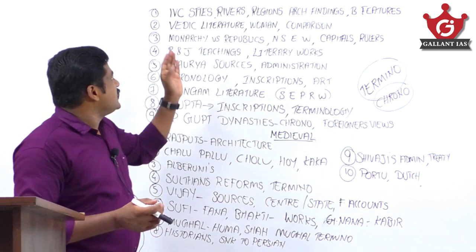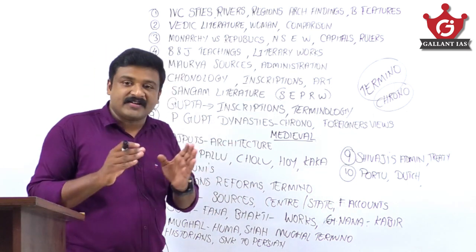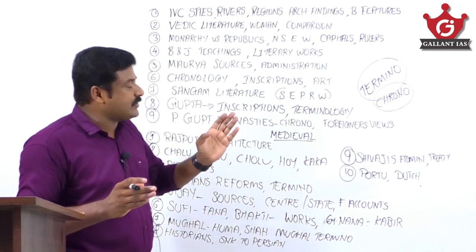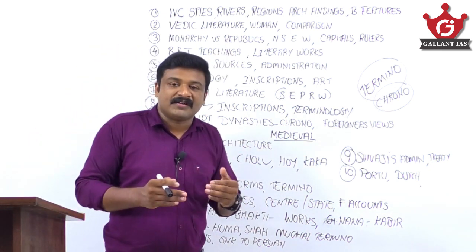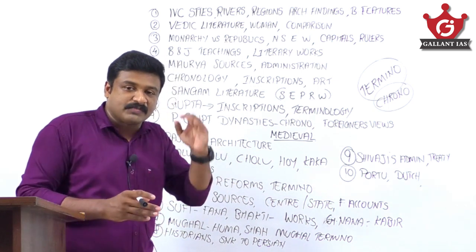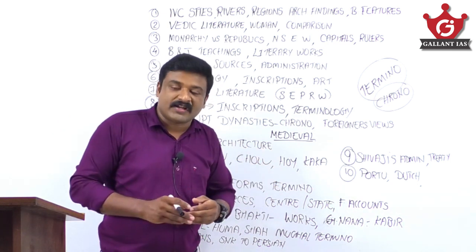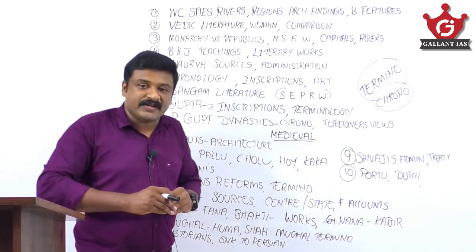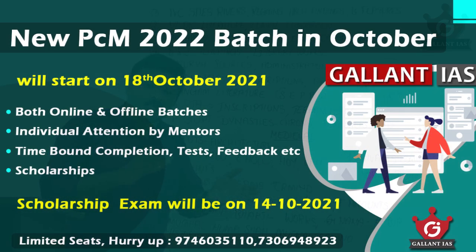From the second module, Vedic literature — you should have a clear idea about the classification of Vedic literature and what each text deals with. Know the status of women in Rig Vedic times versus later Vedic times. Make an analytical comparison between Rig Vedic and later Vedic society, religion, polity, and economy. Also compare the Rig Vedic age with the Indus Valley Civilization.